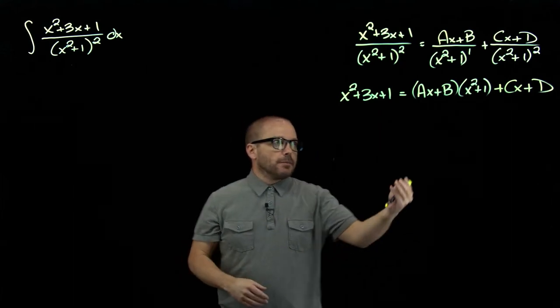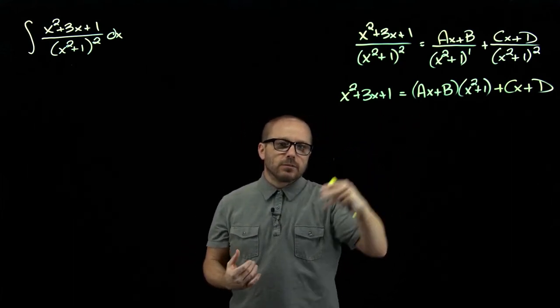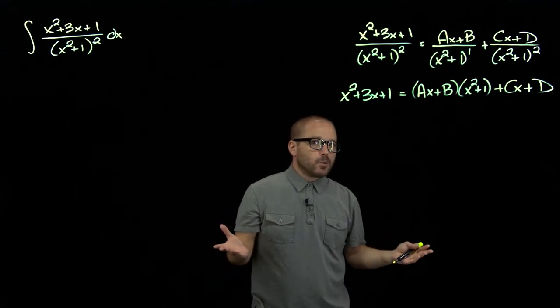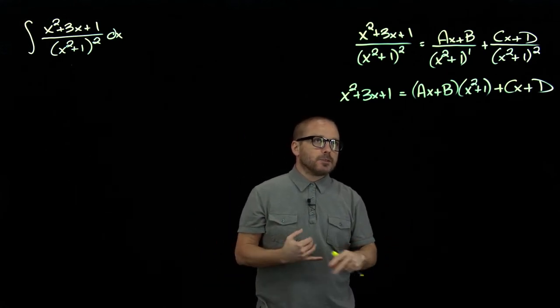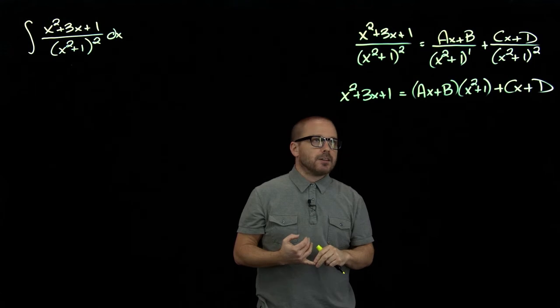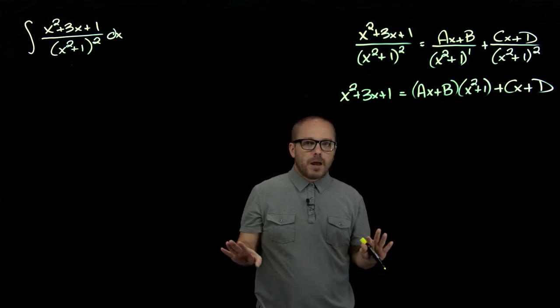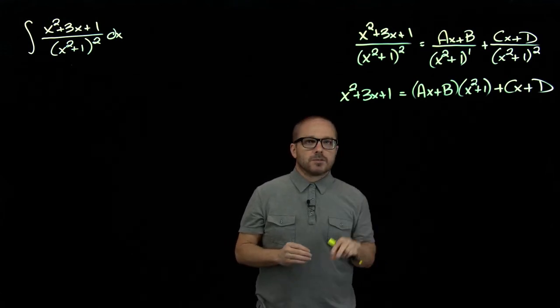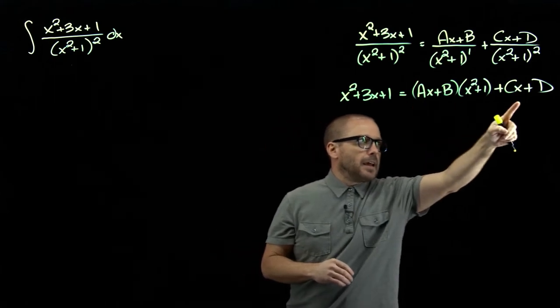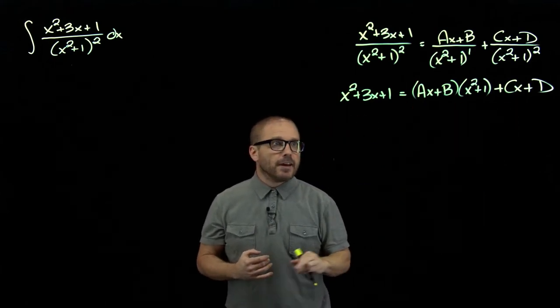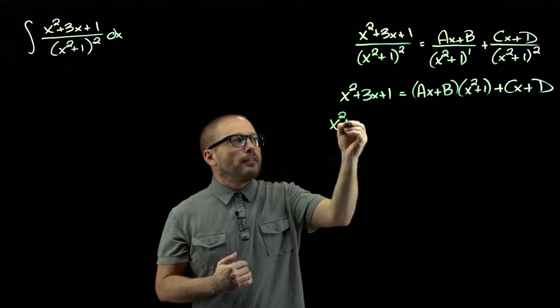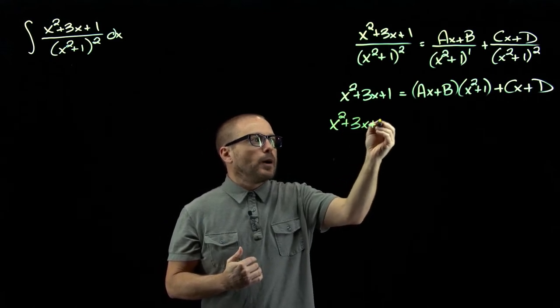And then at this point, it's just a matter of matching coefficients. Remember the shortcut doesn't work for quadratic irreducibles, and it's even more so now that it's repeated. So not even bothering with the shortcut, just going straight to writing this as a polynomial of x. So we have x squared plus three x plus one.